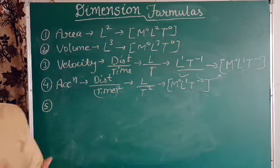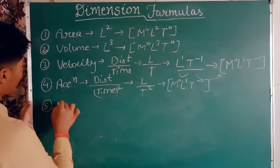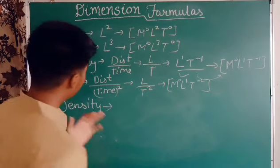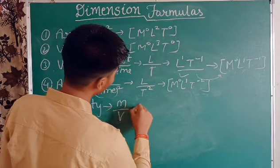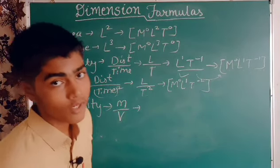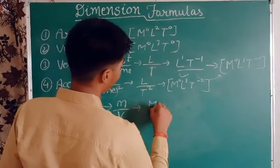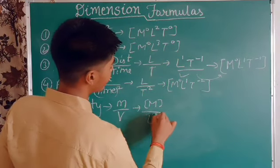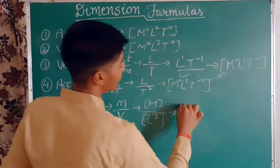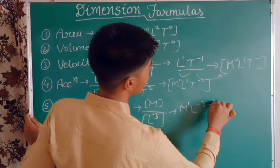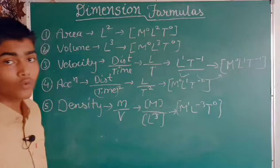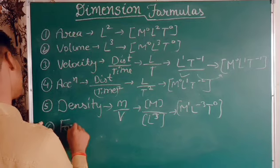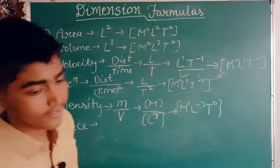Next is density. The formula for density is mass divided by volume. Mass is M, and volume is L³. So we get M¹ divided by L³, which gives us M¹L⁻³T⁰. That is the dimensional formula for density.